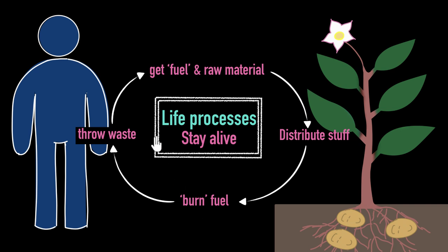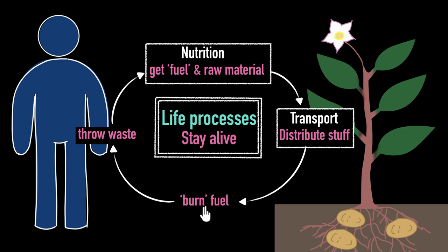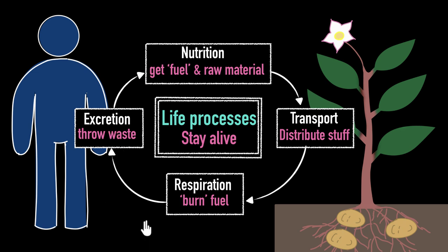Now let's look at the technical names for these processes. The process where you gather the energy source and raw materials is called nutrition. The process where we distribute things around is called transportation. The process in which we release energy from the fuel is called respiration — not to be confused with just breathing; in biology, respiration refers to this energy-releasing process. And the process where waste is thrown out is called excretion. These are the major life processes that most living things carry out on a daily basis, and future videos will cover each one in detail.